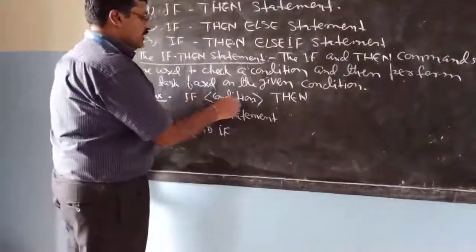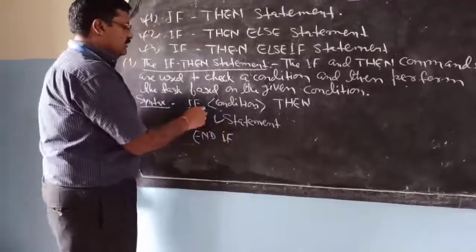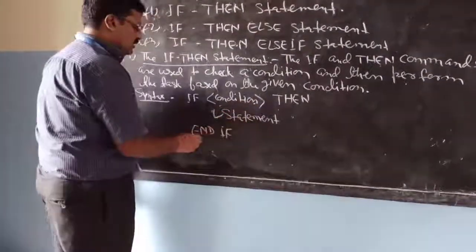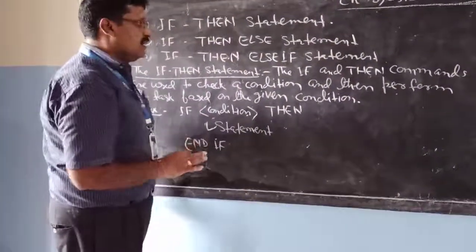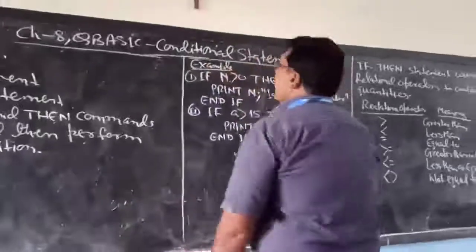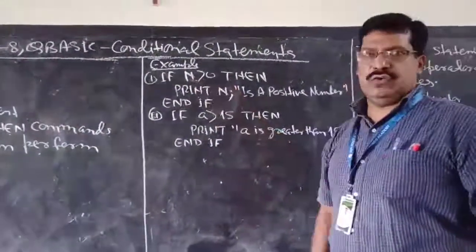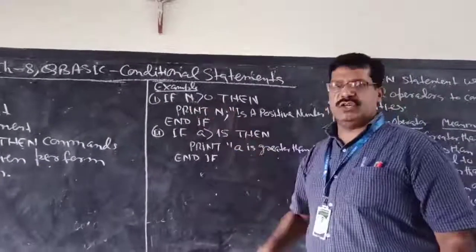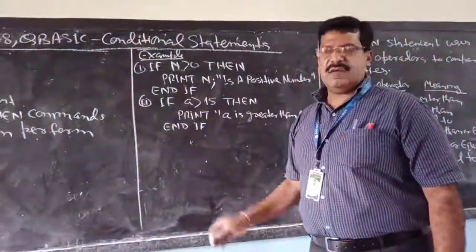What is the syntax? The form is: IF condition THEN statement. If the condition is true, the statement is executed; otherwise nothing is executed. Now see some examples. If N is greater than 0, then it will print that the number is a positive number.